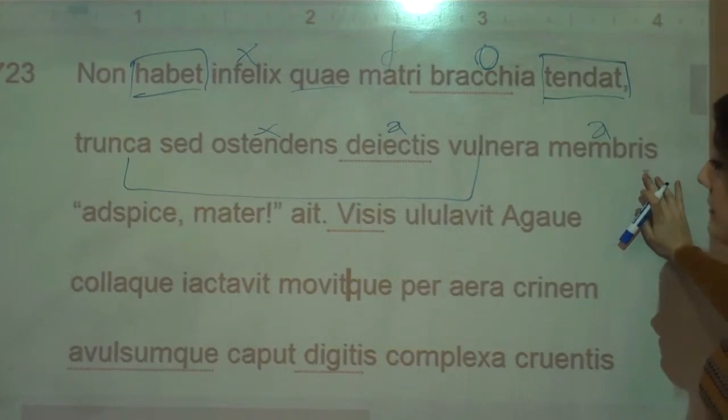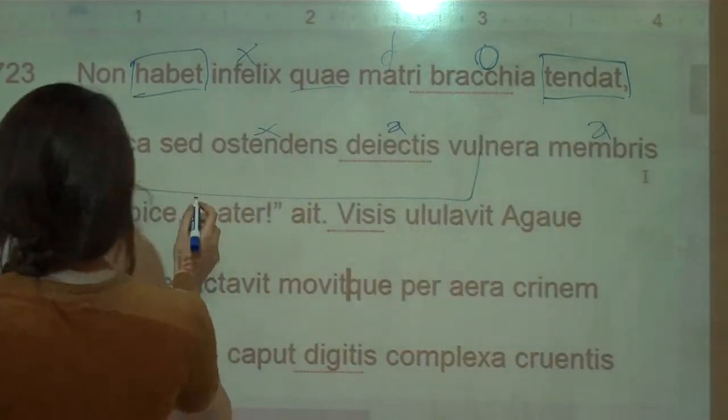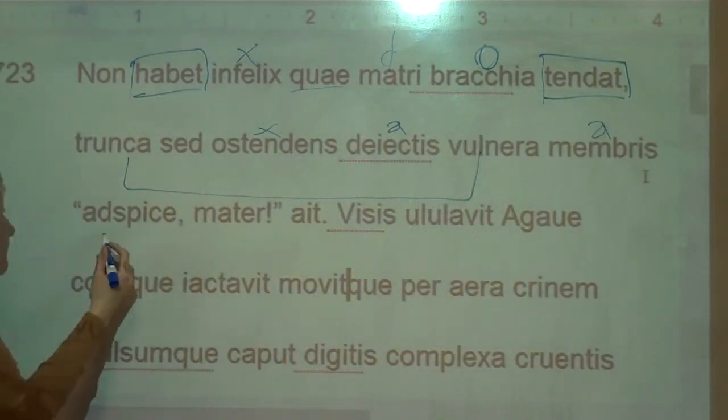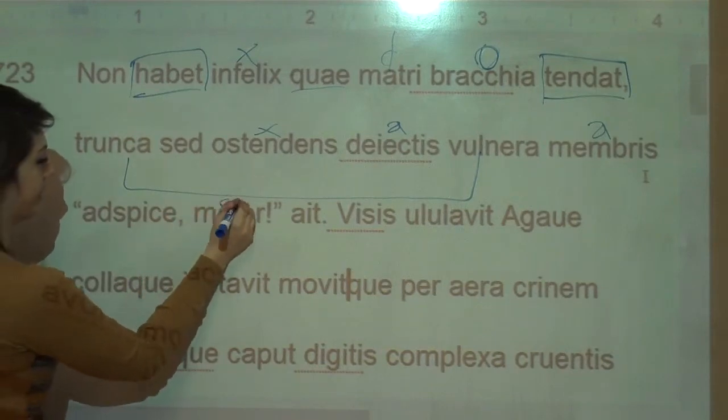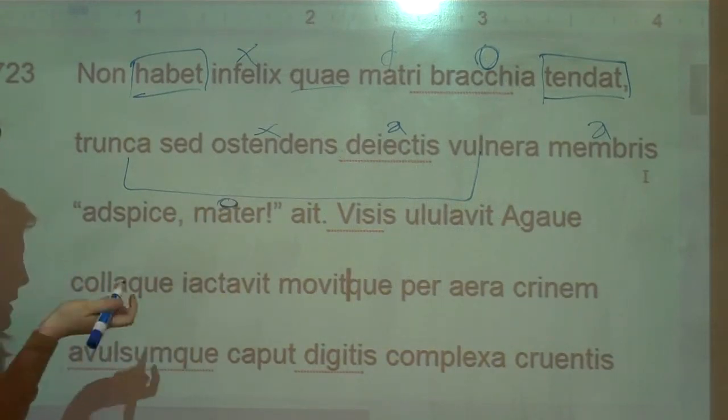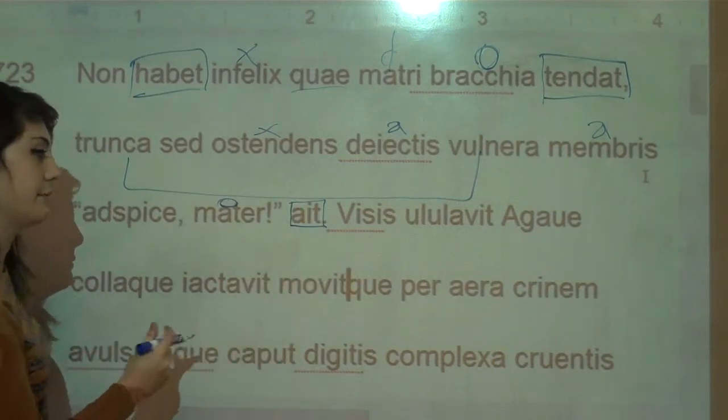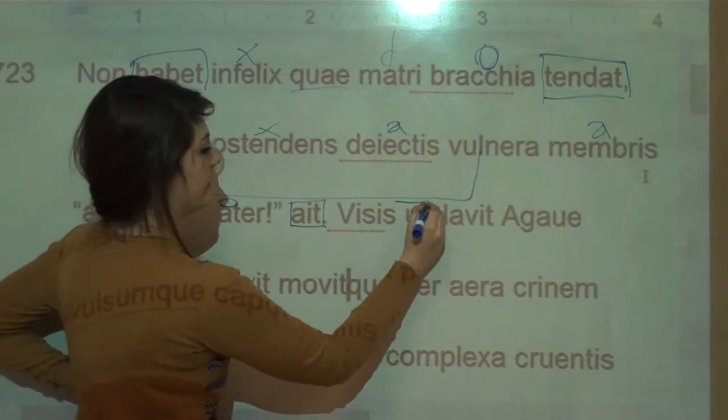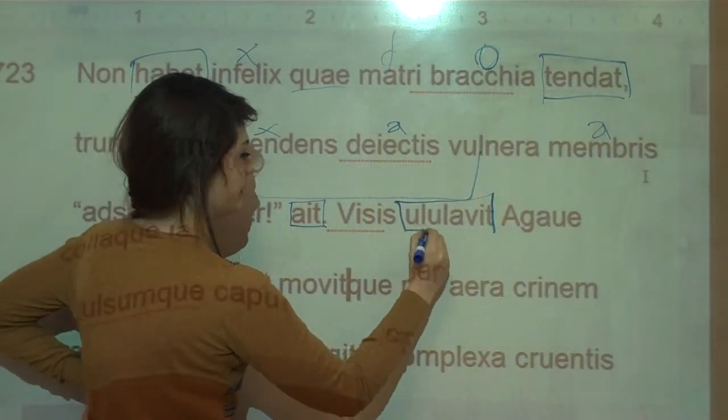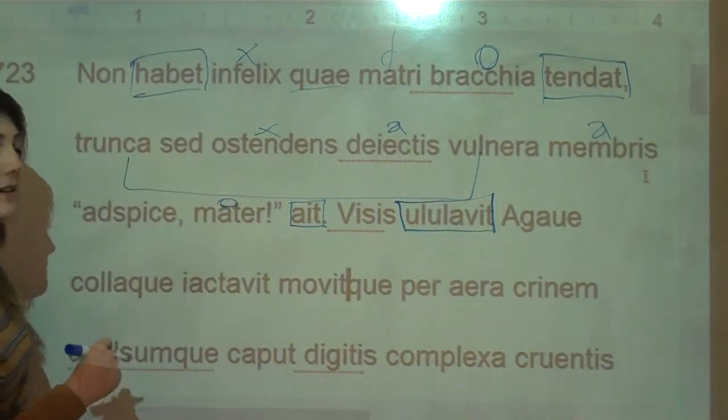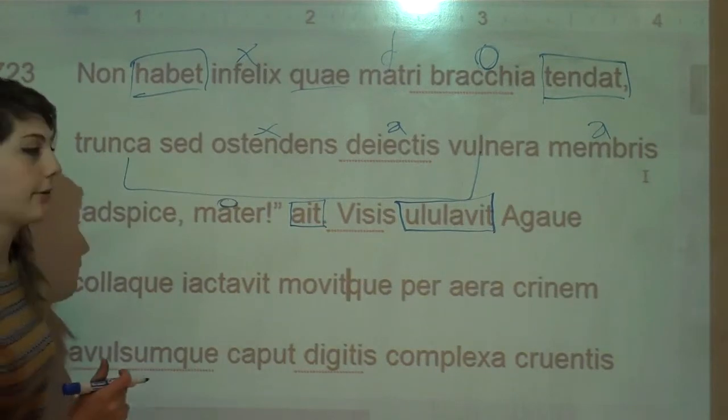And then, adspice mater. So, imperative. Mother's obviously accusative, he said. So Agave sees this, which is his mother, and she howls, but she's not howling like oh my god my son his wounds. She's just like in a frenzy because it's Bacchanalia and they go crazy.